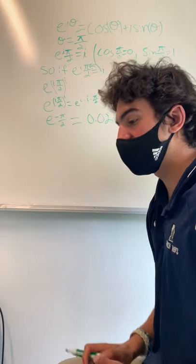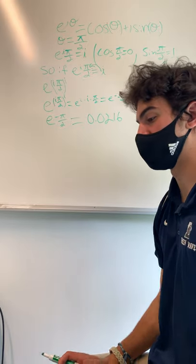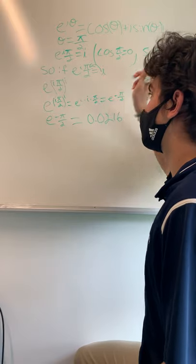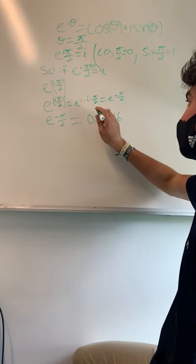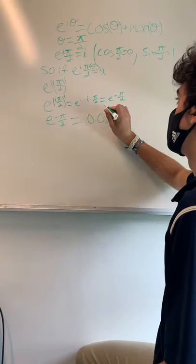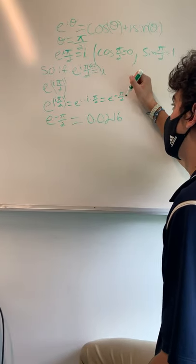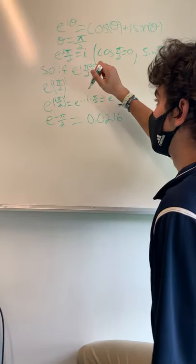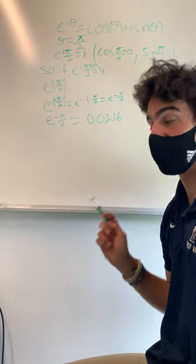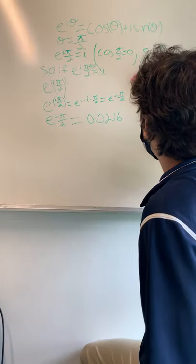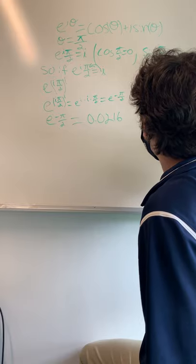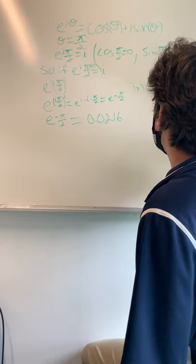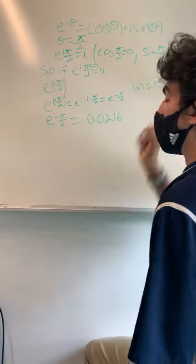Now, exponential values and rules say that e to the i pi over 2 i can be written as e to the i times i times pi over 2, and this equals e to the negative pi over 2 because we know that i times i equals i squared. And the thing we know about i squared is i squared is equal to negative 1.